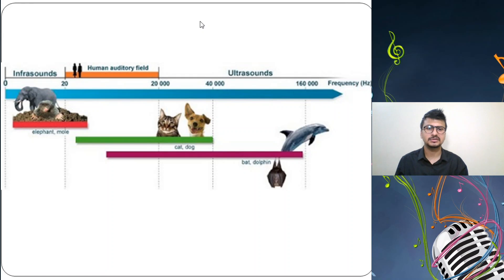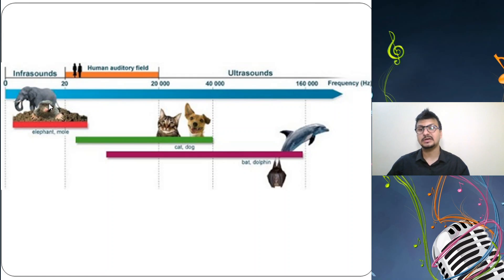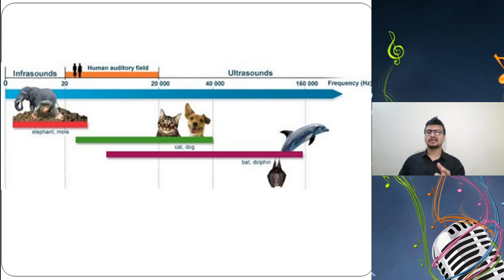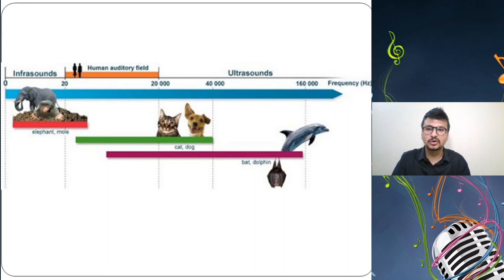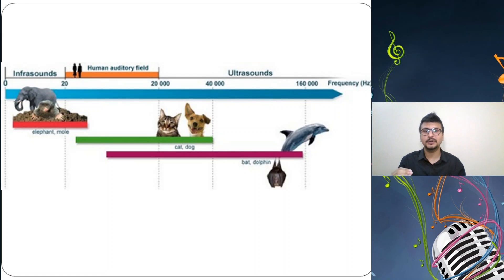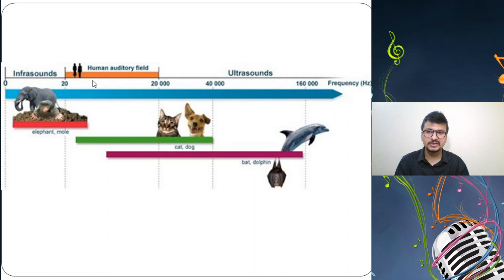There is another chart showing frequency from zero to 160,000 hertz. Elephants hear sound from 0 to 20 hertz — this is called the infrasonic range. We as humans cannot listen in the infrasonic range because our human auditory field comes under the range of 20 to 20,000 hertz, so we cannot hear what elephants can hear in infrasound.